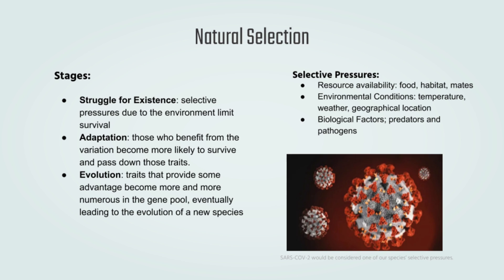With this said, COVID-19 is an example of a selective pressure. Now because of this struggle for existence, certain mutations become adaptations — traits that help organisms under these new circumstances survive better. And because they can survive better, they can pass down their traits to their offspring. This will lead to evolution, wherein over time that trait becomes more and more numerous in the gene pool, eventually leading to the creation of a new species with a new phenotype.